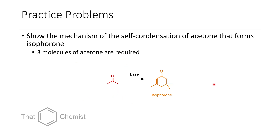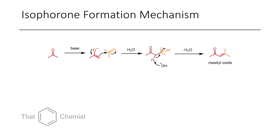For the next problem, I asked you to show the mechanism for the synthesis of isophorone from acetone, which undergoes this reaction in the presence of a base such as potassium hydroxide or sodium methoxide. Three molecules of acetone are required. Initially, acetone is deprotonated to make its enolate form. It then undergoes a self-condensation reaction with another molecule of acetone, forming a beta-hydroxy ketone. Because we're under highly basic conditions, the hydroxide is able to eliminate the hydroxy group as water, forming mesityl oxide as our intermediate product.